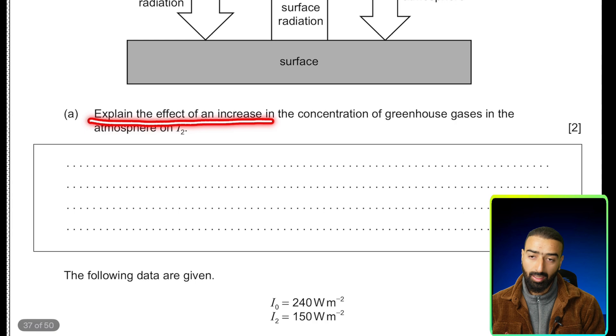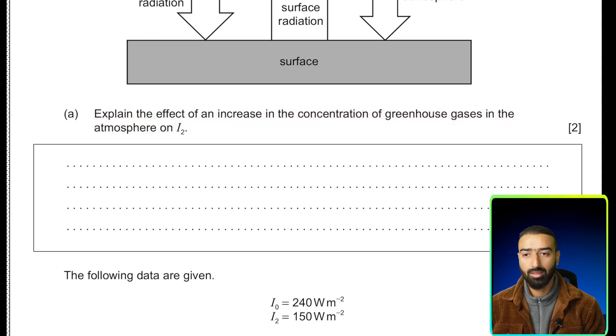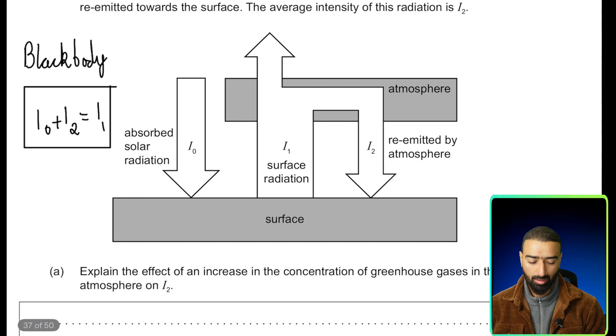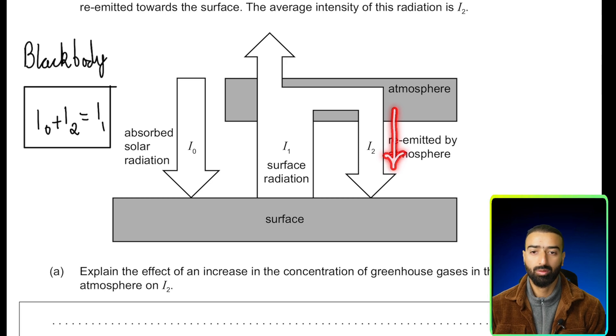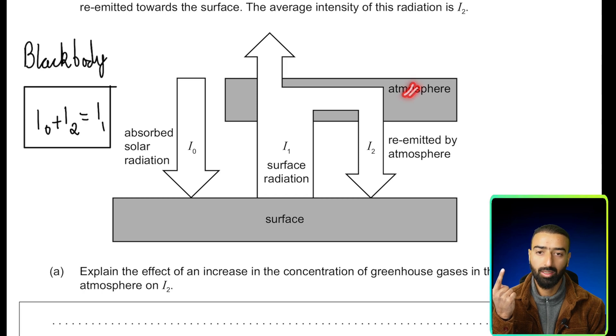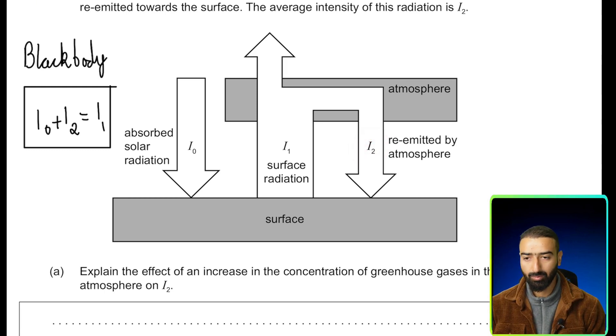Explain the effect of an increase in the concentration of greenhouse gases in the atmosphere on I2. So if there's an increase of greenhouse gases in the atmosphere, what's going to happen? First of all, more of the surface radiation I1 would be absorbed by the greenhouse gases. Once they absorb more radiation, they're going to re-emit a larger amount of it back towards the surface. So there's an increase in the absorption by the atmosphere and there is an increase in the re-emitted intensity of light back to the surface. So I2 is going to increase. That explains this first part of the problem.